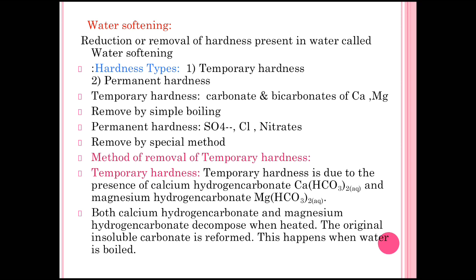Temporary hardness is called temporary because just by using the boiling process all impurities get removed. But there are some special methods required to remove sulfate, chloride, and nitrate present in water, so that is called the permanent type of hardness. Now the methods of removal of temporary hardness — the first one is the boiling process.